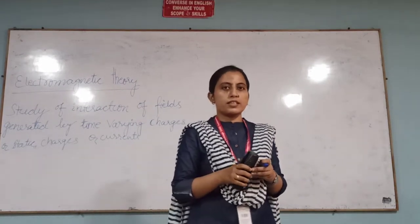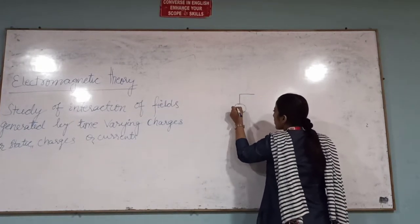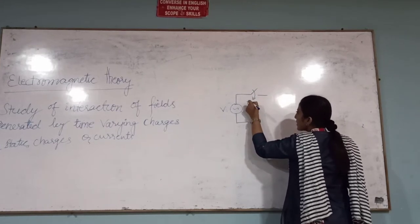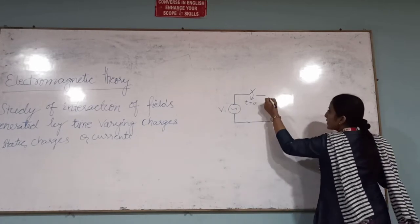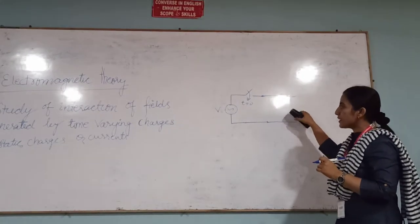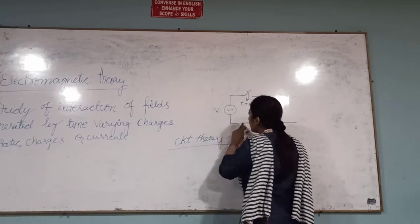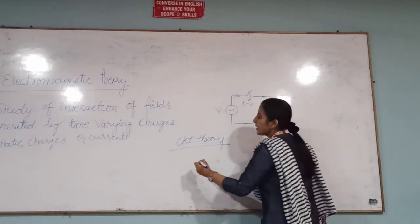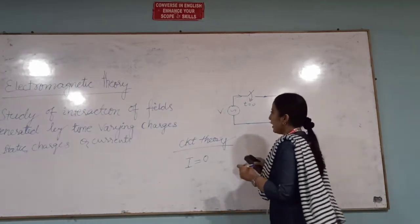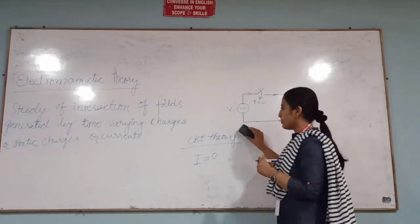We have studied about circuit theory, how circuit theory differs from electromagnetic theory. We consider here one source, we have a switch here that is closing at t equals zero, and we have a wire connected to this source and this wire is open, there is no load connected here. According to circuit theory, what will be the current? Current will be zero, why? Because it is not terminated properly, it is open.